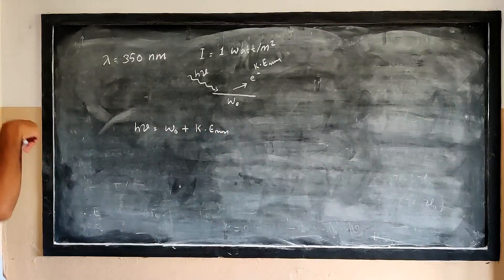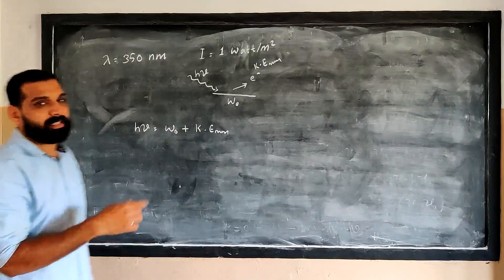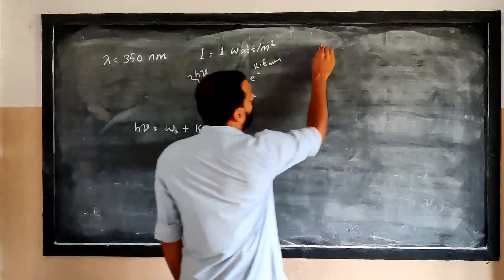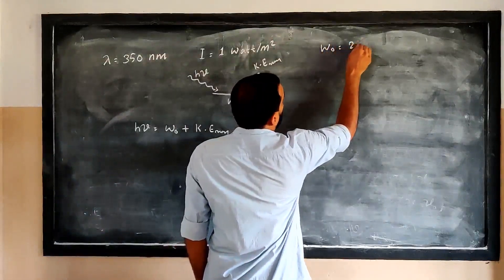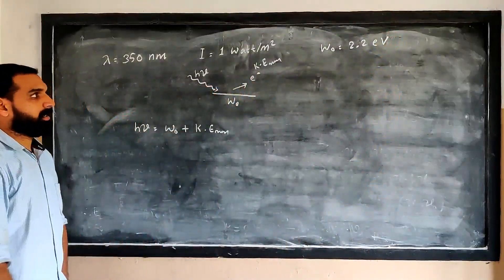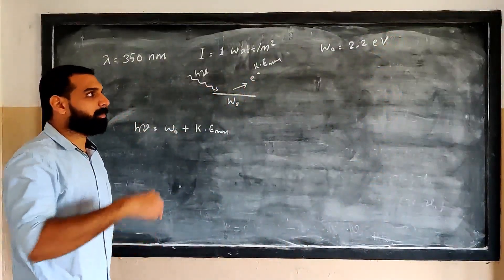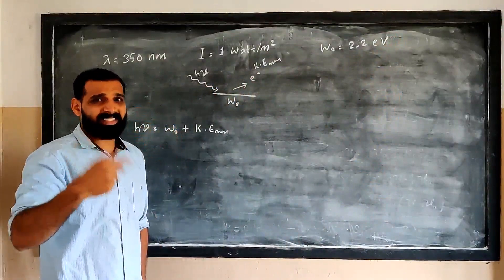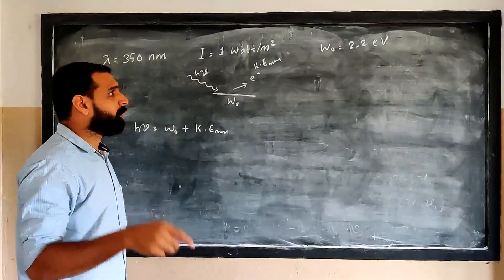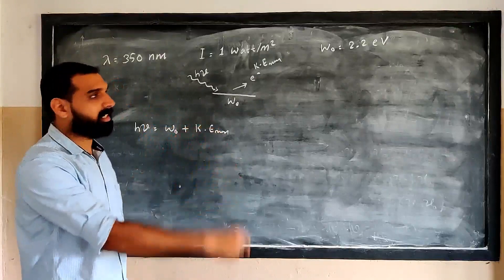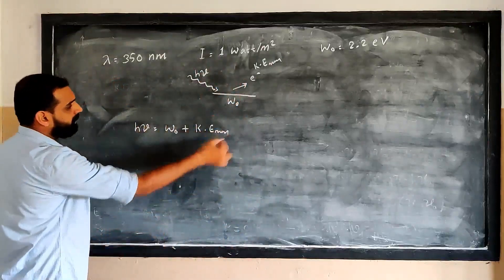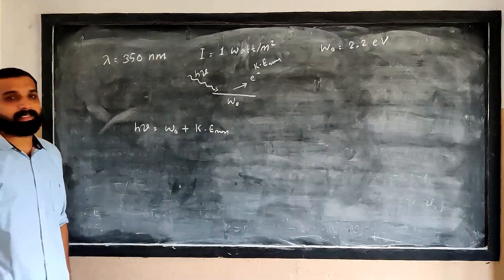In this question, we are dealing with potassium. We know in this question it asks about potassium, and the work function W is equal to 2.2 electron volts. We need to calculate the maximum kinetic energy.